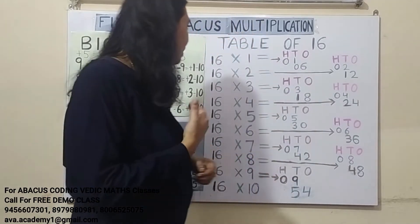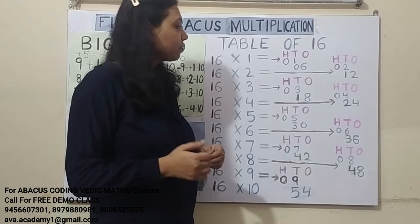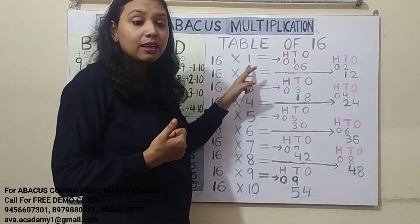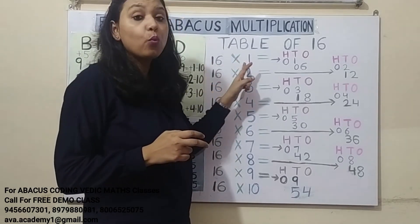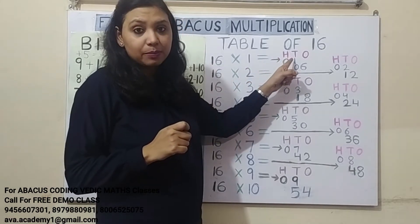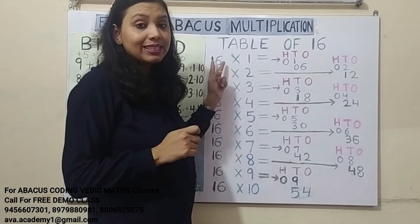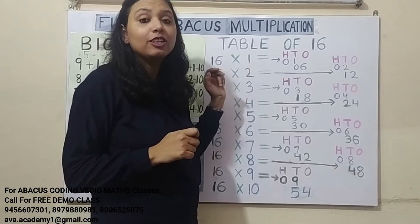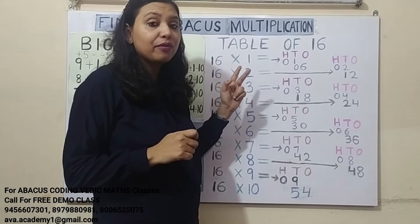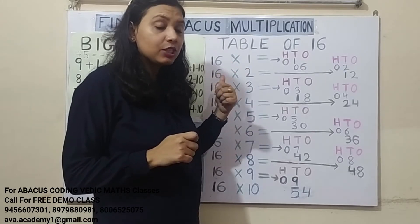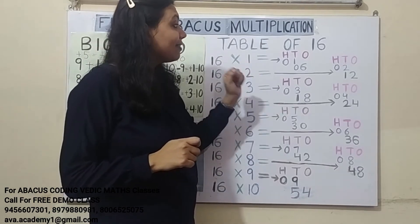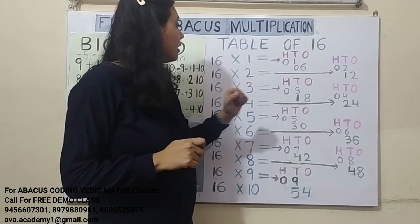Understood? Now we will quickly revise the rules. The first rule is to see how many digits there are. If the question is 2 digits into 1 digit, then the answer will always come in 100's place. Friends, if the question is 2 digit into 2 digit, like 16 into 11 or 16 into 12, then the answer will always start from 1000's place. We are doing 2 digit into 1 digit multiplication, so the answer will always start from 100's place.